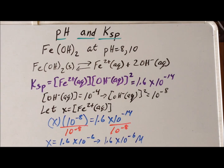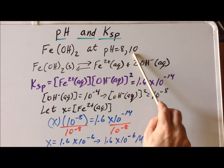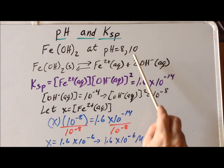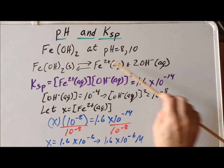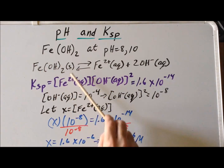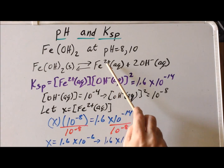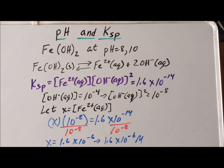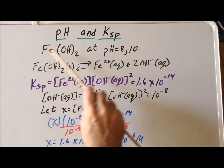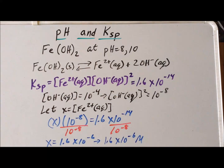One last point: we notice that the molar solubility of iron 2 hydroxide decreased significantly as pH went from 8 to 10. This makes complete sense in terms of Le Chatelier's principle — as we increase pH, we increase the concentration of hydroxide, one of the products, which shifts the equilibrium to the left and reduces the dissolved iron 2 plus concentration. So we see a very clear pH dependence on the solubility of iron 2 hydroxide. Thank you very much for your attention.